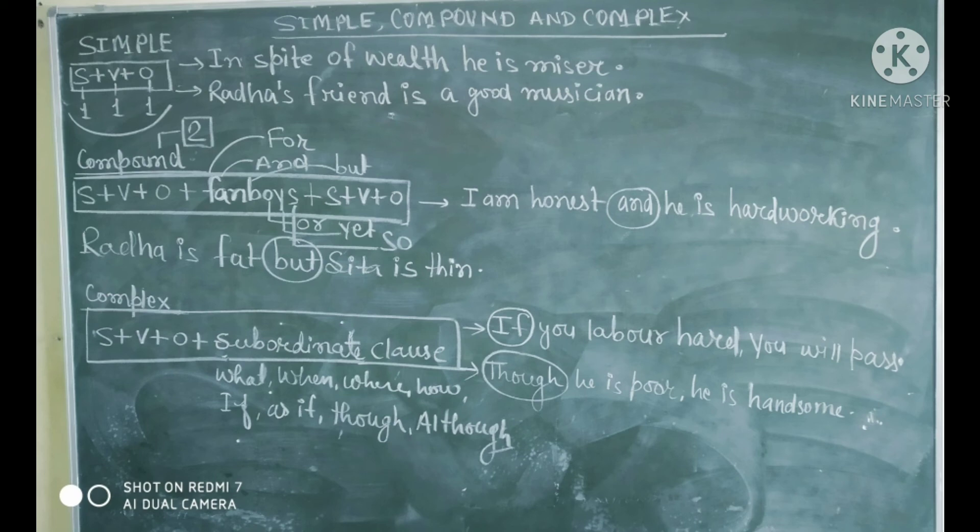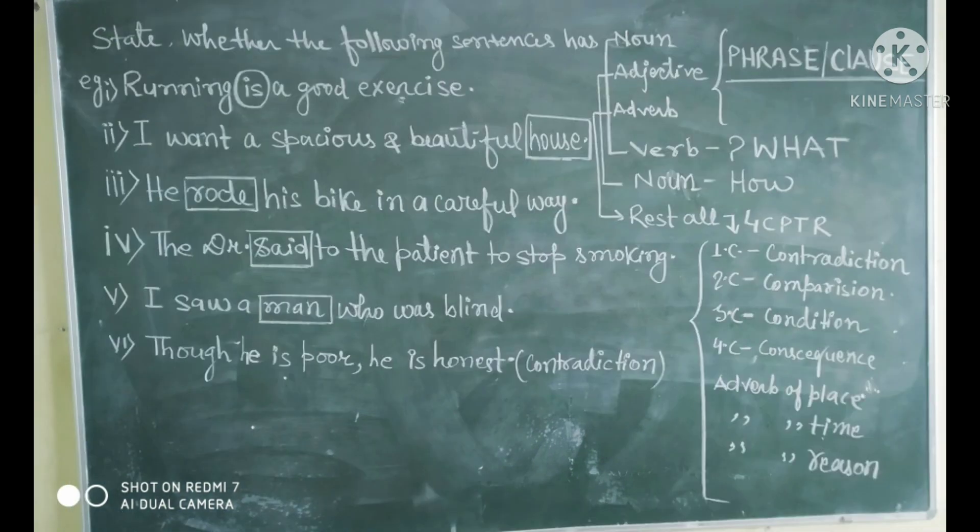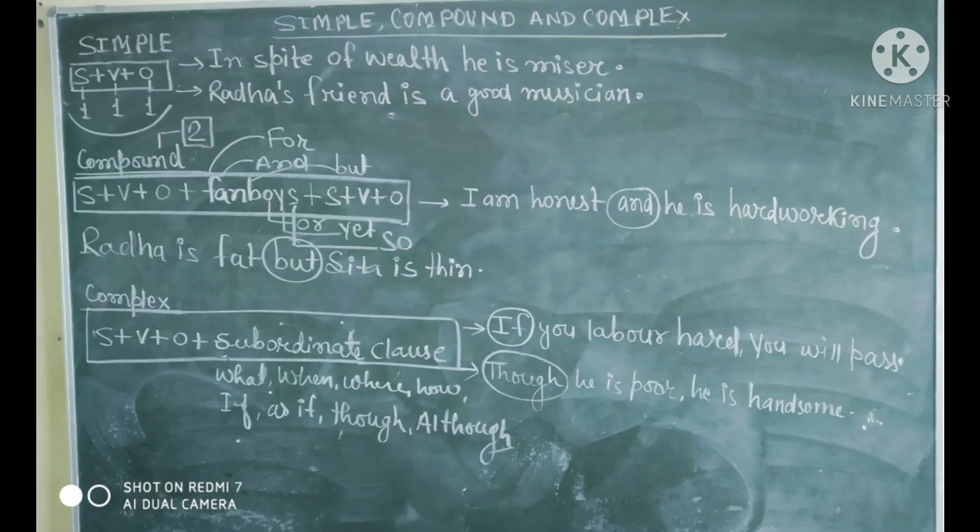Now, coming to the third kind of sentence, that one is complex. Complex sentence mein aapko identify karna hai conjunction. Agar conjunction hai aur wo Fan voice nahi hai, to wo nishchit roop se certainly complex sentence hi hai. Complex sentence mein aapka jo conjunction hoga, wo conjunction W, H se ya if se shuru hoga, ya that se shuru hoga, ya though ya although se shuru hoga. Example dekho: If you labor hard, you will pass. Yaha par if ko circle kiya hua hai. If circle karne ke baad, chuki yeh ek subordinate conjunction hai, aapka subordinate conjunction mein complete. Thank you all.